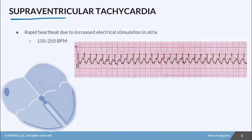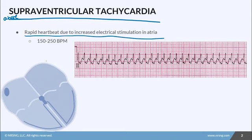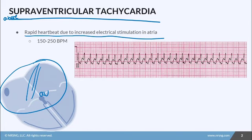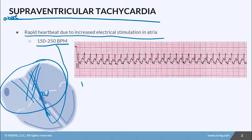With supraventricular tachycardia, like the name says, something is starting above the ventricles. It is a rapid heartbeat due to increased electrical stimulation somewhere in the atria or in the AV node. This causes a rapid electrical impulse to get down to the ventricles, and the ventricles contract at a rate of 150 to 250 beats per minute. Because it's contracting so fast, we have less blood going to the ventricles, so cardiac output decreases tremendously, which is why most people are very symptomatic.